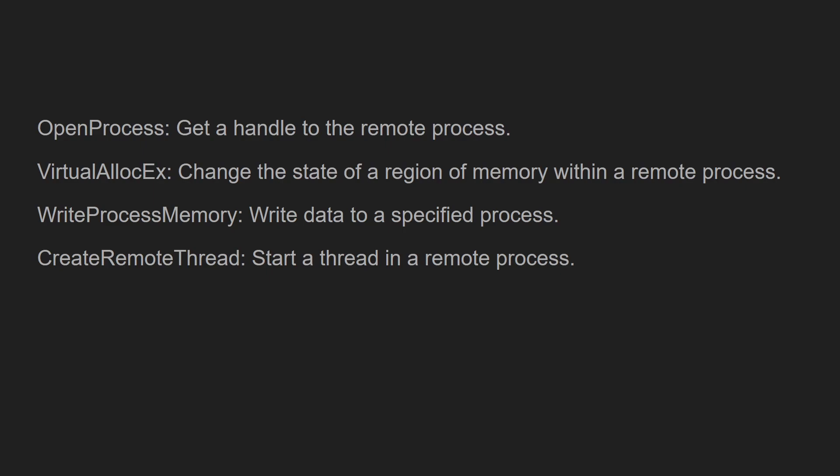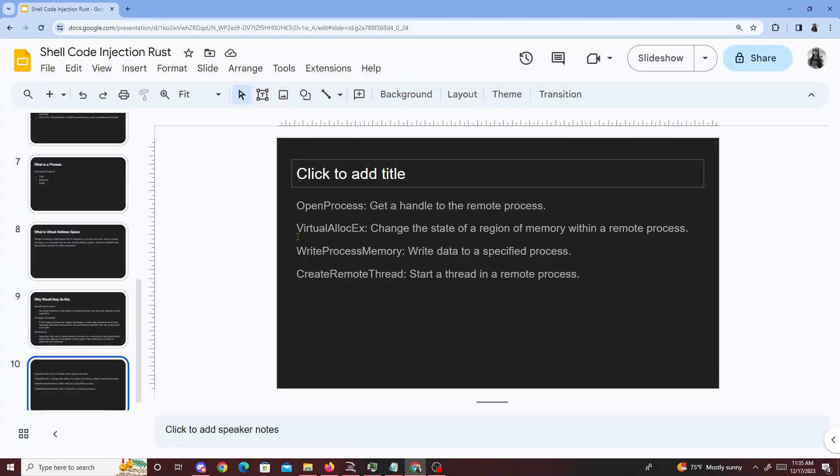For this example I'm going to be using four or five main Windows API functions. First, OpenProcess — this gets the handle of a remote process currently running on the system. Then VirtualAllocEx, which gives us permission to write to that process. Next, WriteProcessMemory, which writes our shellcode into that process memory. Finally, CreateRemoteThread, which starts a thread and executes our shellcode.